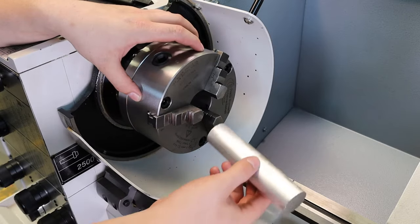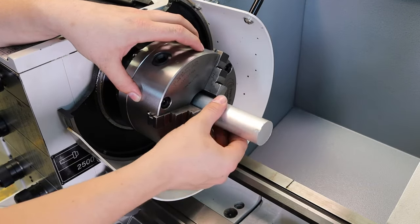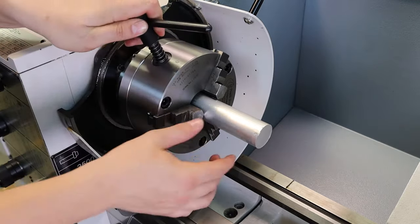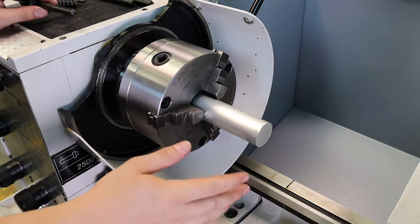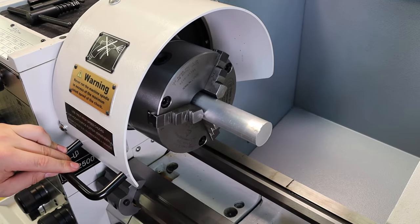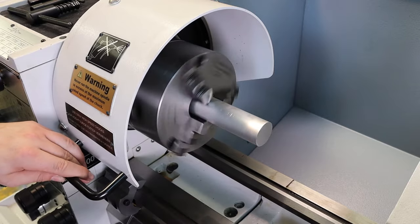Now we're lucky with a three jaw chuck because when we place our material in, these are mostly self-centering. So when we tighten it up, especially if you've got a good piece of material, the material should sit fairly true. So if I close that over and turn the lathe on, you can see it's fairly straight, it's running pretty parallel.